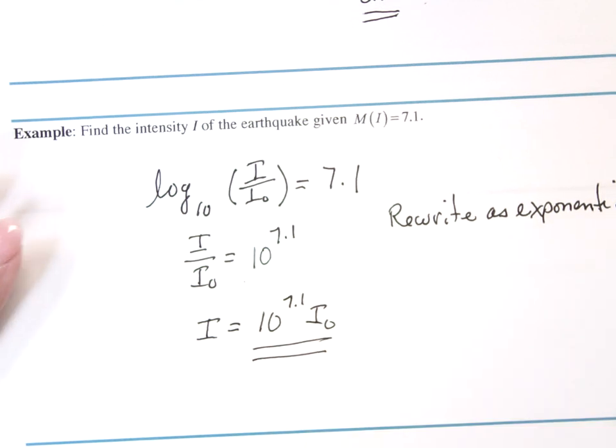Now, that doesn't have any meaning to us. It would have a meaning to scientists, but not to us. 7.1 has meaning, because we know that's a pretty hefty quake at 7.1. But, 10 to the 7.1 times I sub zero doesn't mean a heck of a lot. Except it's a problem to work in your book.